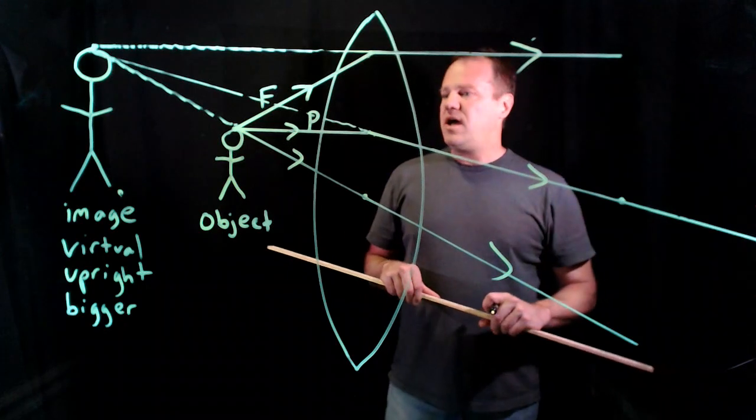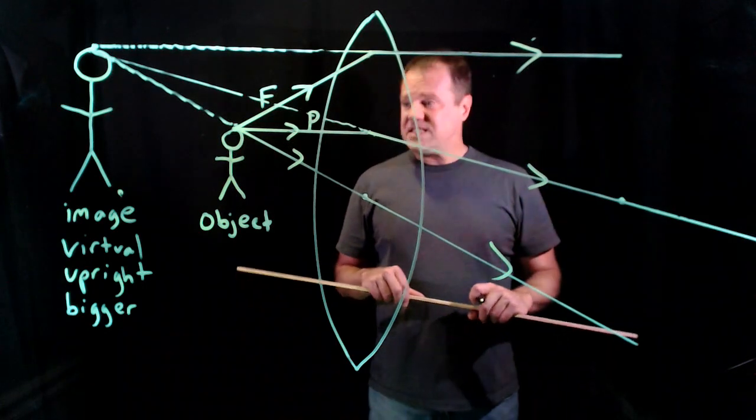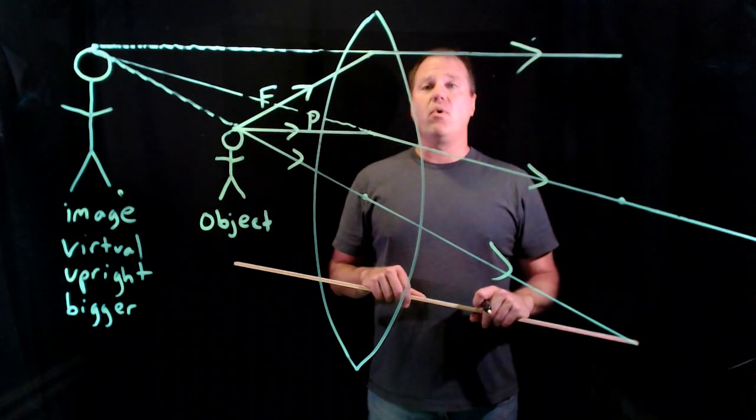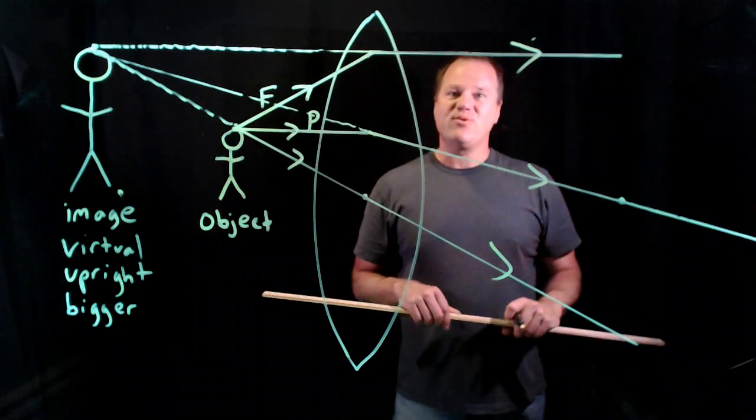So that's how you deal with an object inside the focal point for a biconvex lens. Thanks for watching.